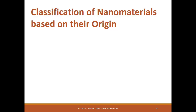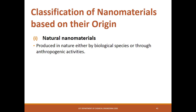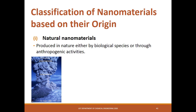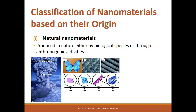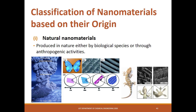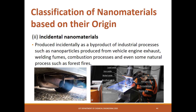Nanomaterials can either be found in nature or artificially synthesized, and can be classified based on their origin. The first category is natural nanomaterials, found in nature through anthropogenic activities and biological species, such as the nanostructure of butterfly wings that causes vibrant colors and the foot of the gecko that can attach to any surface. There are also incidental nanomaterials, which are not intended to be produced and form as by-products of industrial processes such as vehicle engine exhaust, welding fumes, combustion processes, and plasma and ozone treatments.